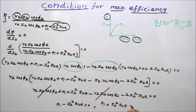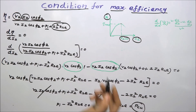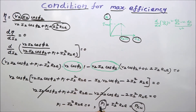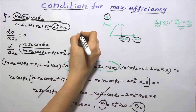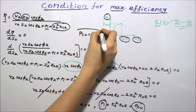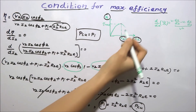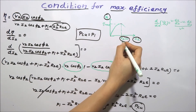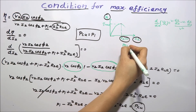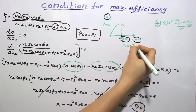Since I2²·R2E is the copper loss, the condition for maximum efficiency is that the iron loss must equal the copper loss: P_copper = P_iron. The load current I2M attains the value at which maximum efficiency occurs precisely when the copper loss equals the iron loss.